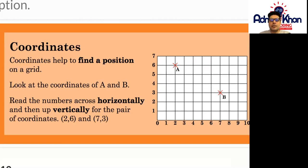So coordinates help you find a position on a grid. Look at the coordinates of A and B. Read the numbers across horizontally and then up vertically for the pair of coordinates 2, 6 and 7, 3.